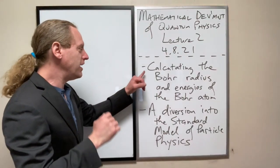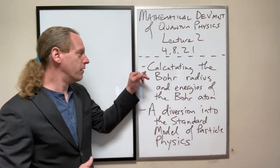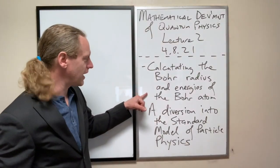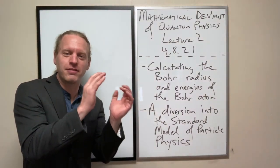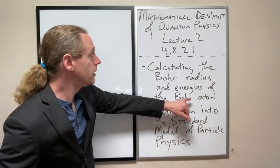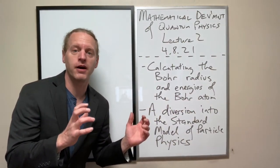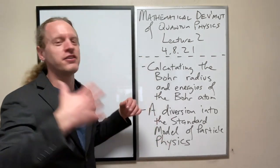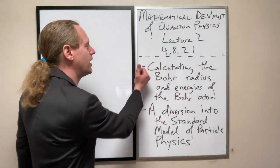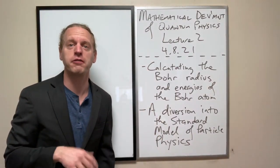So, anyway, based on the work that we had built up last time, we're now finally ready to actually calculate what the expected radius of the Bohr atom is, and what the energy levels of the Bohr atom are. And this is kind of cool, because we've used some crazy, unreasonable assumptions that don't follow from classical physics.